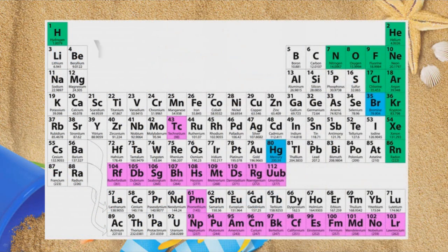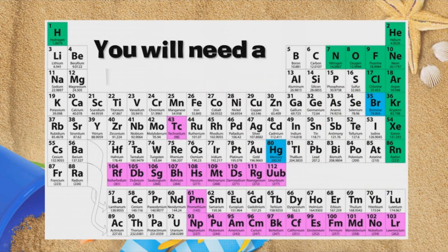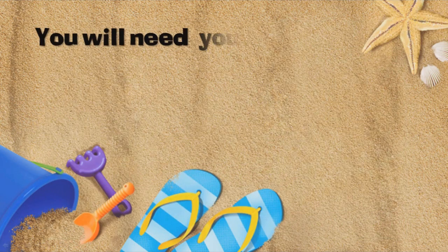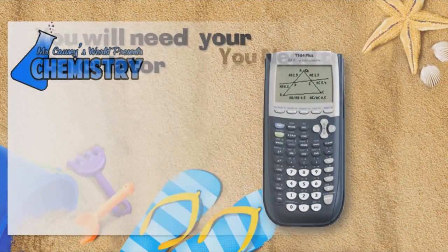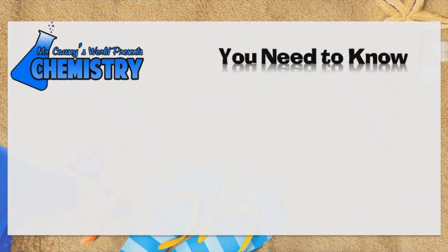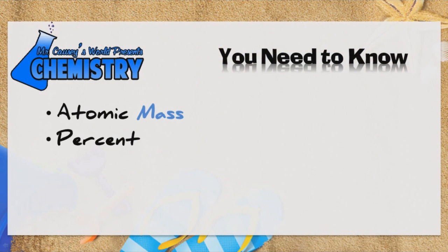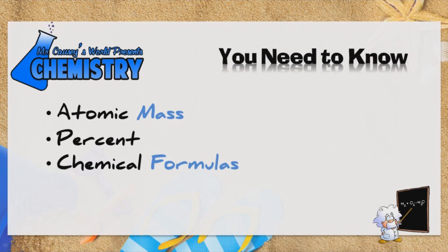This week's problem is going to need you to have a periodic table. You're going to need a calculator, and you need to know how to find atomic mass off the periodic table, how to find a percent, and chemical formulas. I have a video on chemical formulas should you be struggling with that — go watch it, then come back.